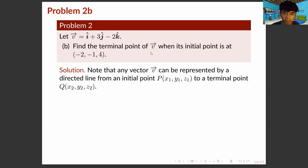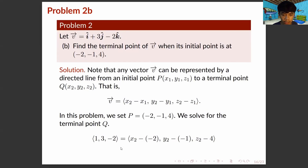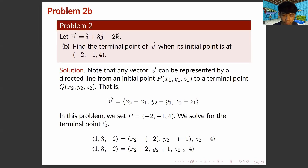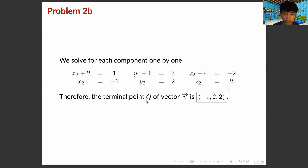For part B, we find the terminal point of vector V when its initial point is at (−2, −1, 4). Using the formula: vector V equals (x₂ minus x₁, y₂ minus y₁, z₂ minus z₁), and our vector V is (1, 3, −2), we solve individually for x₂, y₂, and z₂. As a result, x₂ equals −1, y₂ equals 2, and z₂ equals 2. Therefore, the terminal point of vector V is (−1, 2, 2).